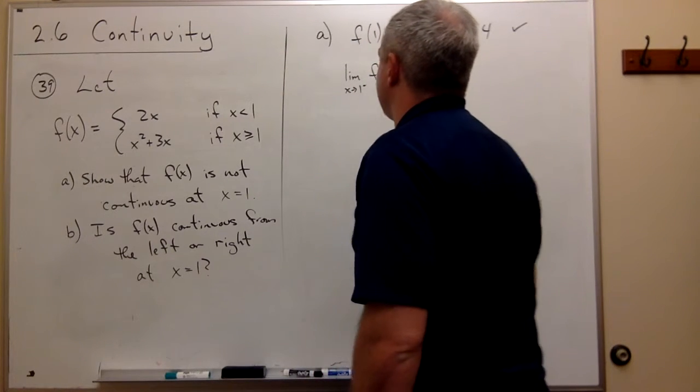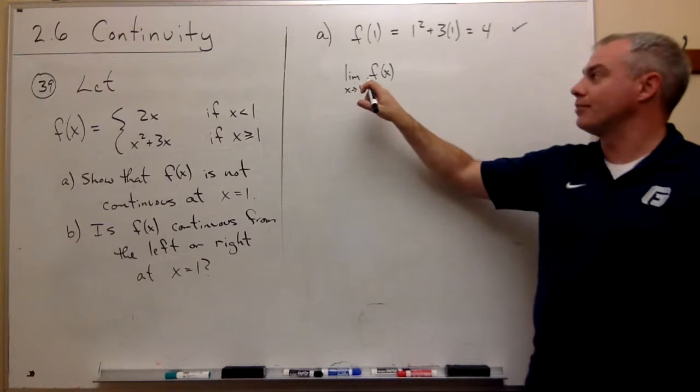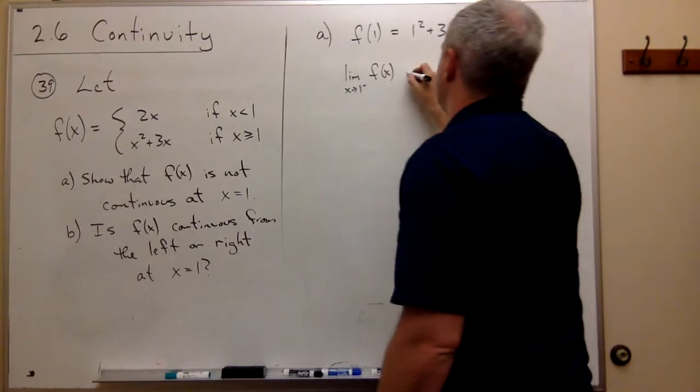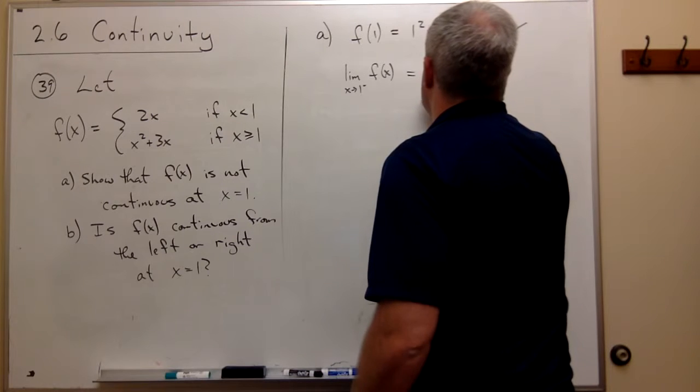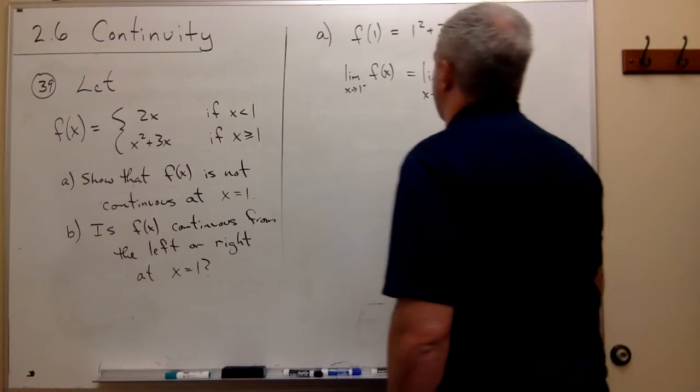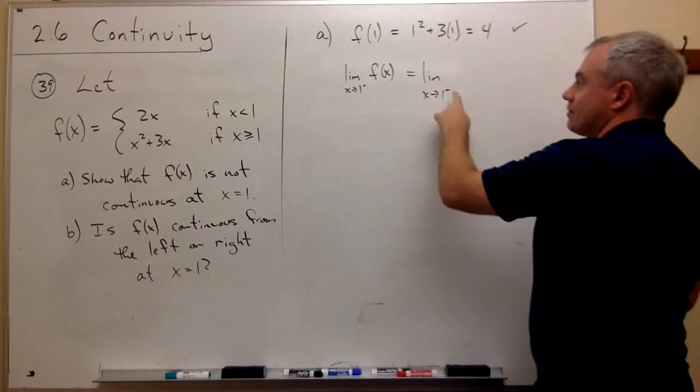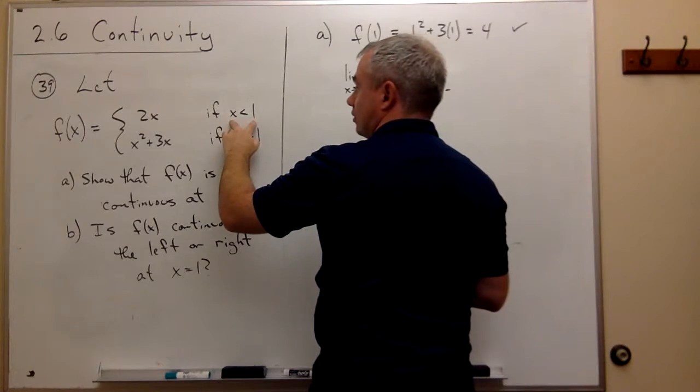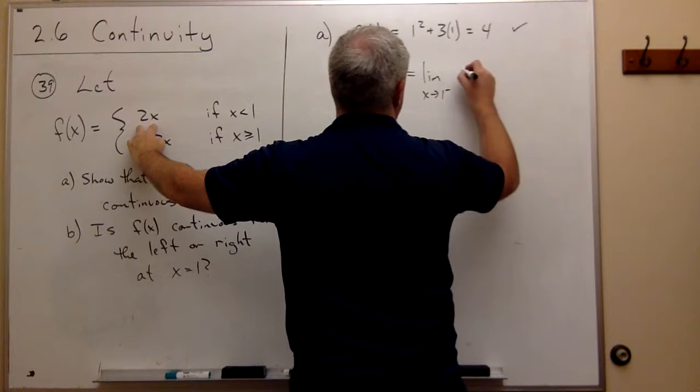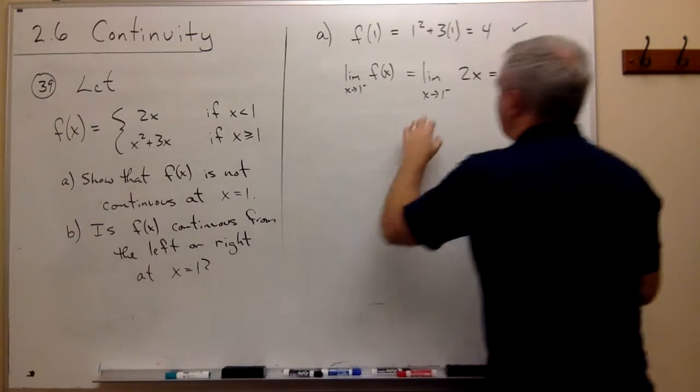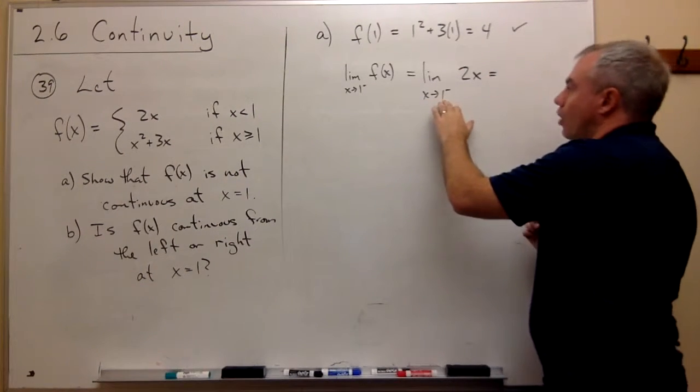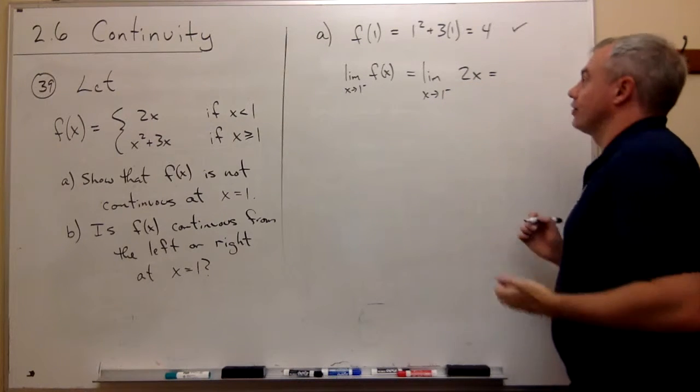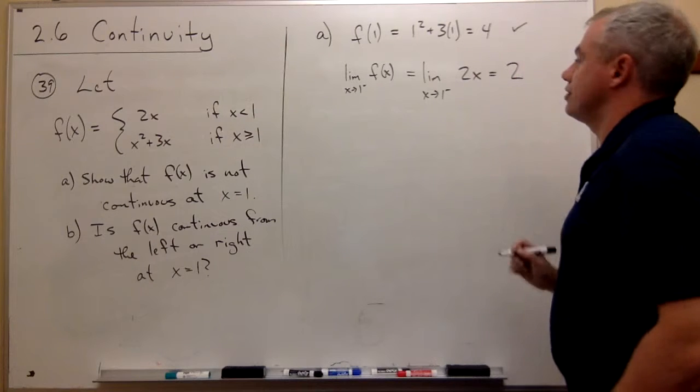Okay, so I'll replace this. This is the limit as x goes to 1 from the left of f(x). But from the left, that's less than 1. X's are less than 1, so we use 2x. And the limit as x goes to 1 from the left of 2x, well, I can just plug in the 1. I don't get any division by 0, and I get 2.